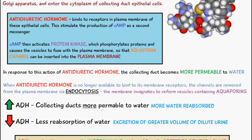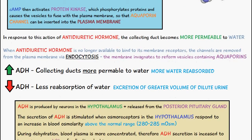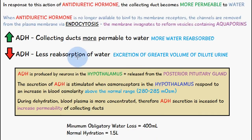The membrane invaginates to reform vesicles containing aquaporins. When these aquaporins are no longer required, the process of endocytosis causes them to invaginate and be stored back in vesicles.